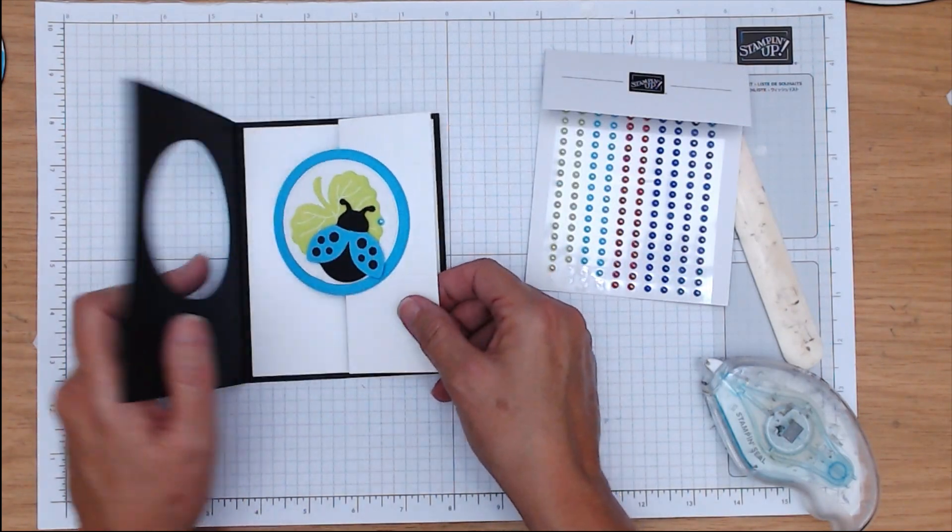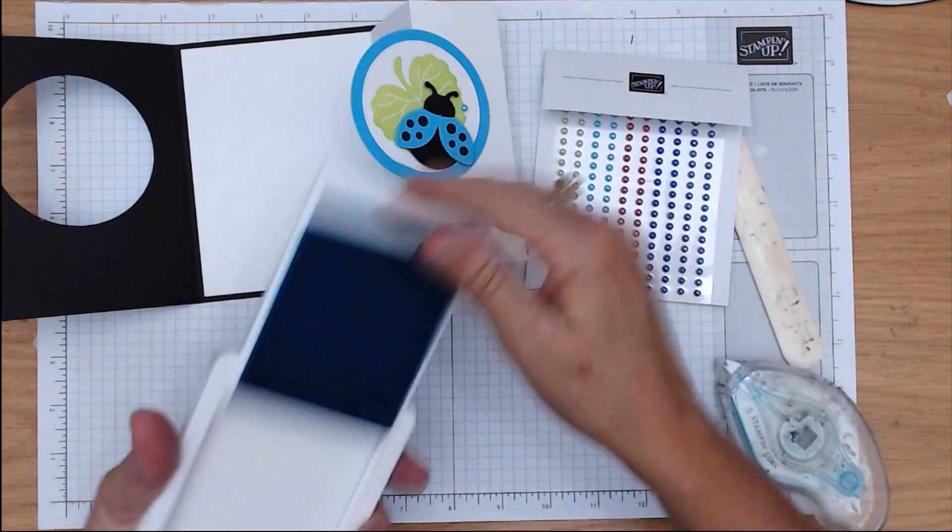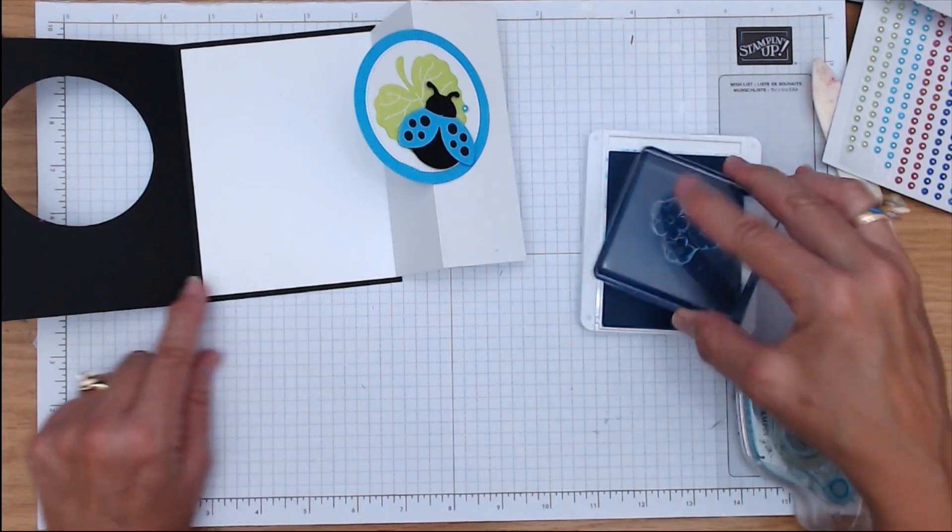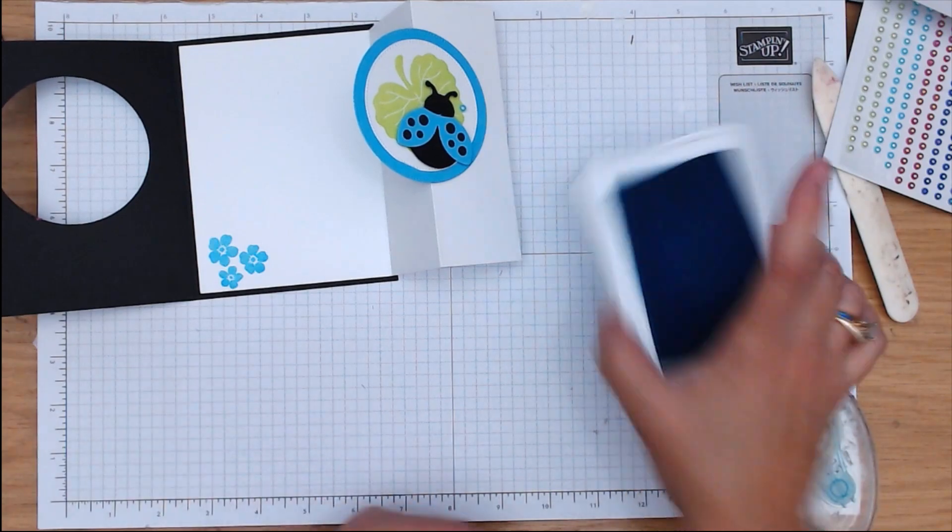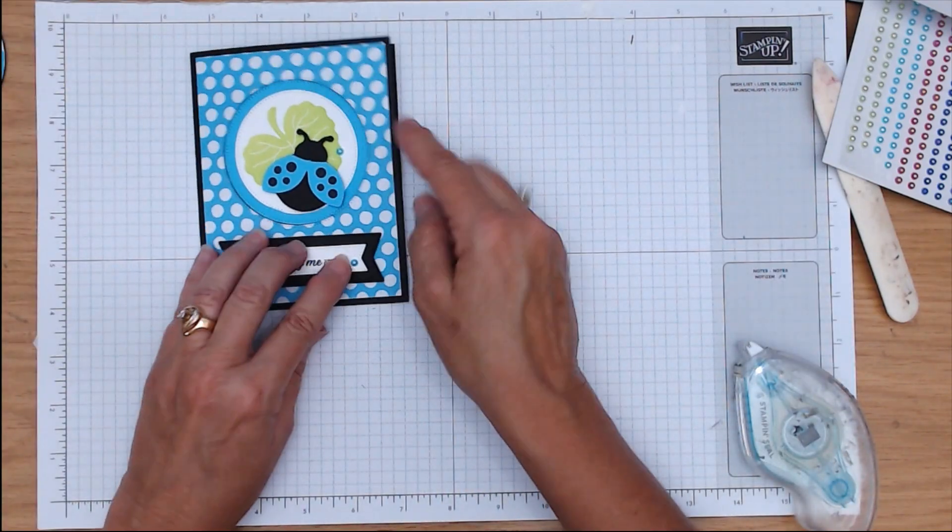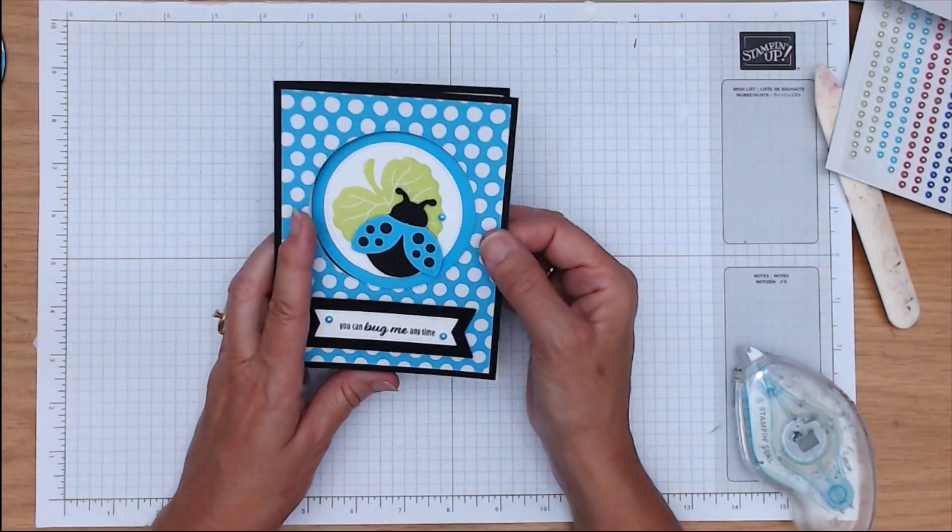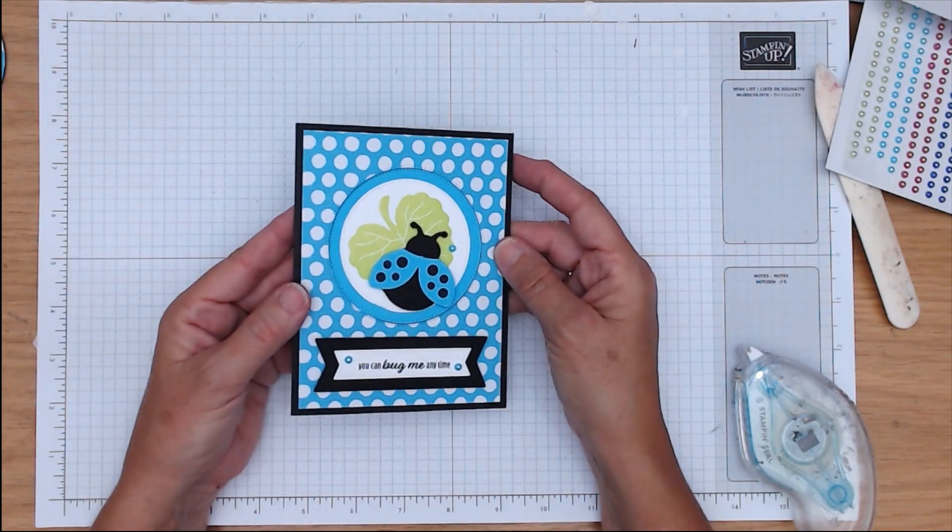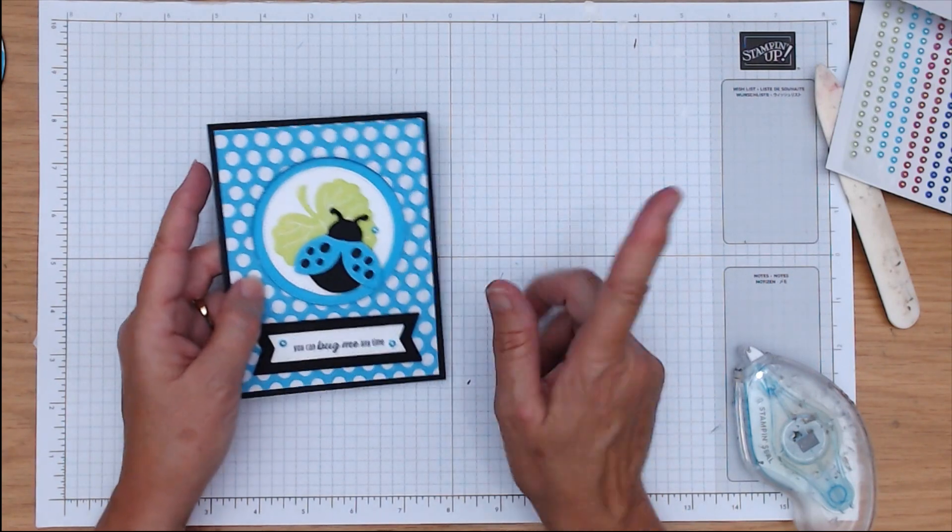And then I'm going to come in with the new in-color pearls. So I'm going to use the Tahitian Tide ones here, like so. And then I think I'll put one up here. So this is flip up, pull out. So now in the inside, I'm going to take the Tahitian Tide ink and the little flowers from the Hello Ladybug set. And I'm just going to stamp them right there to decorate my inside. So isn't that cute? Now you probably remember that.